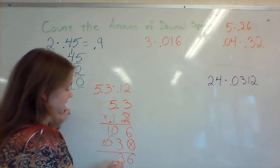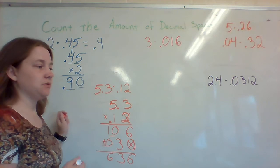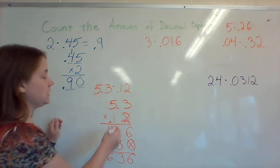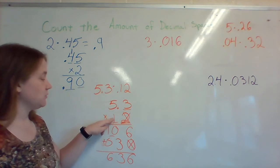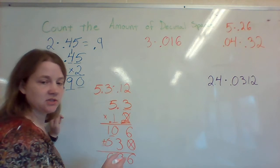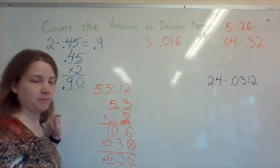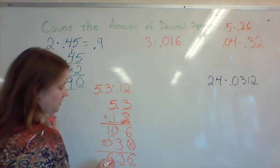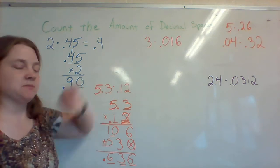3 plus 0 is 3. 1 plus 5 is 6. And now that I have that all figured out, I need to count the amount of numbers after the decimal. So I'm going to count 1, 2, 3. Doesn't matter if it's crossed off. And because there's 1, 2, 3 numbers after the decimal point in my question, I'm going to start at the end and go 1, 2, 3 spaces over to find where my decimal goes in my answer. So my answer is going to be 636 thousandths.